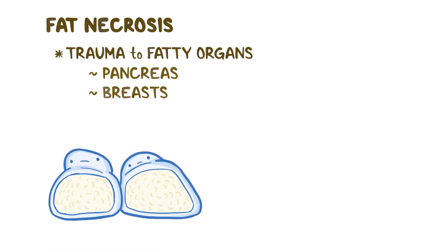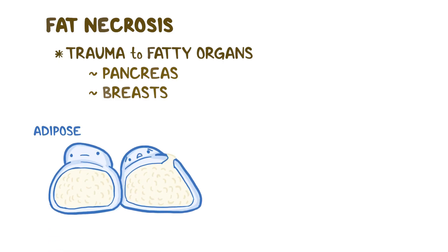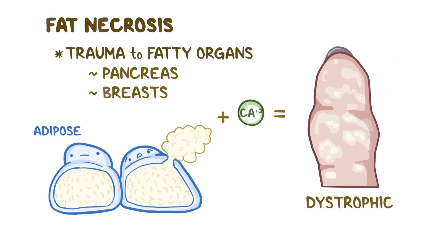There's fat necrosis, which most commonly occurs when there's trauma to fatty organs that have a lot of adipose cells, like the pancreas or the breasts. Trauma to the pancreas or the breasts rupture the adipose cell membranes, which makes them spill their fatty acids into extracellular space. There, the fatty acids combine with calcium, which leads to dystrophic calcifications in the tissue that look like bits of chalk in the tissue.